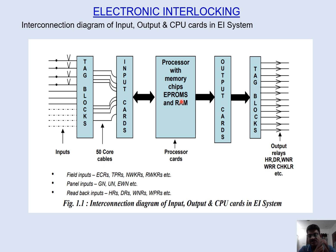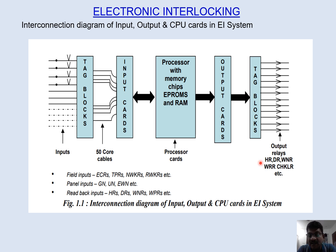After processing, based on the interlocking and the station-specific application logic, we have output cards which are connected. These output cards give output to pick-up relays through a tag block. Examples of output relays include HR, DR, point operation relays, crank handle relays, and all such things which are output relays.